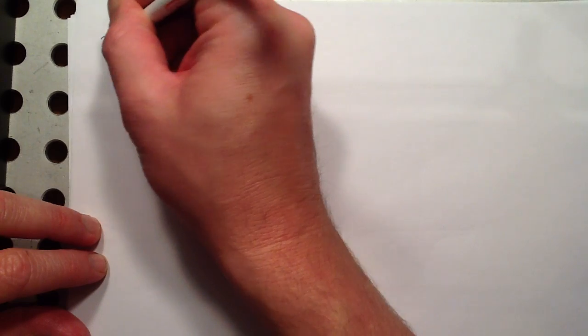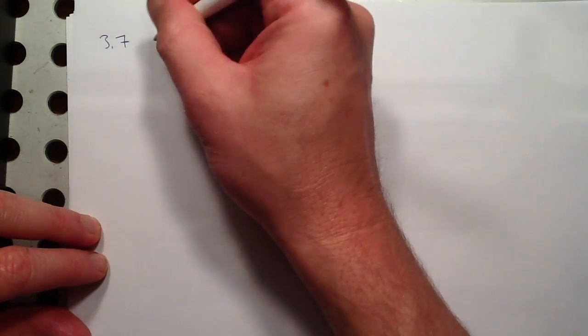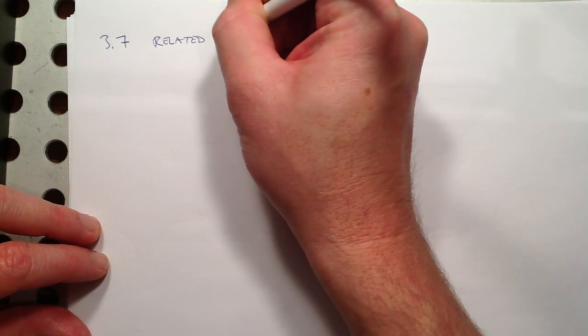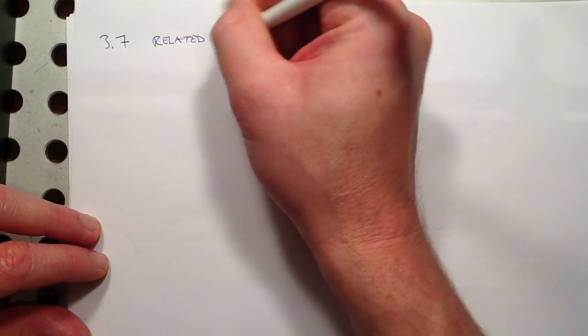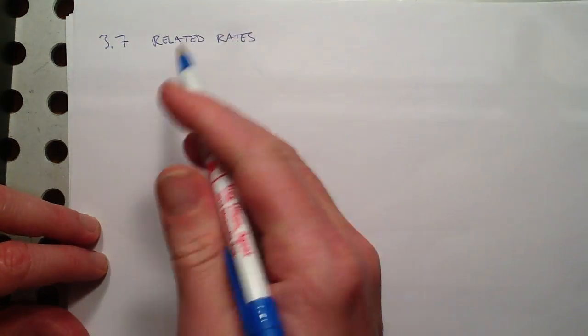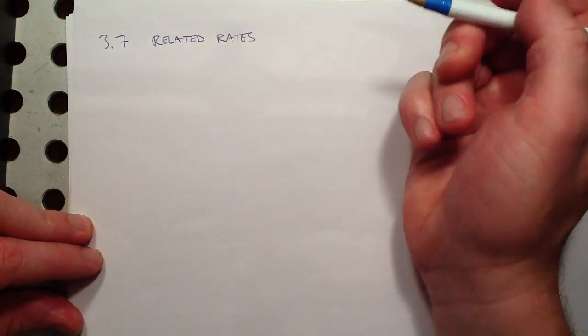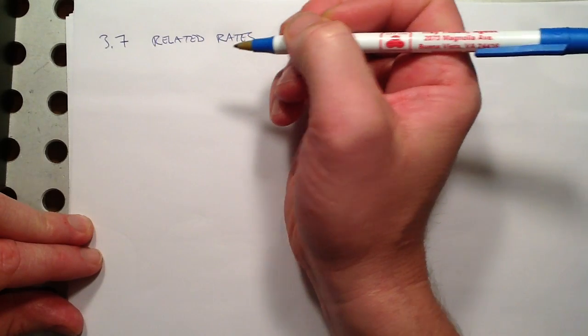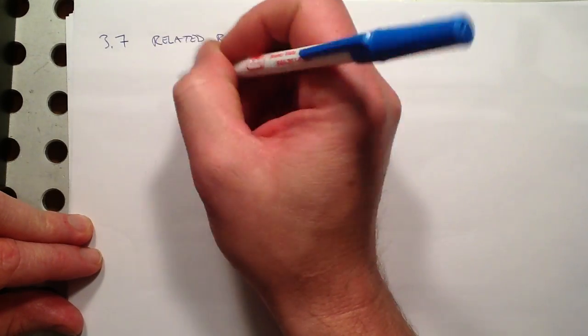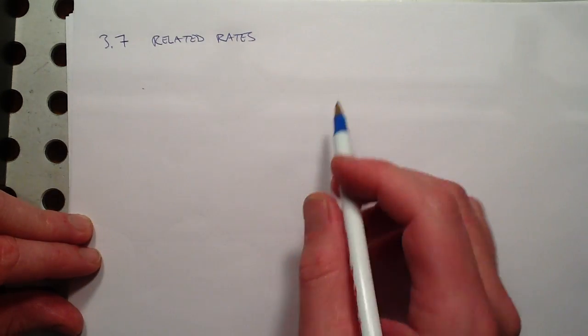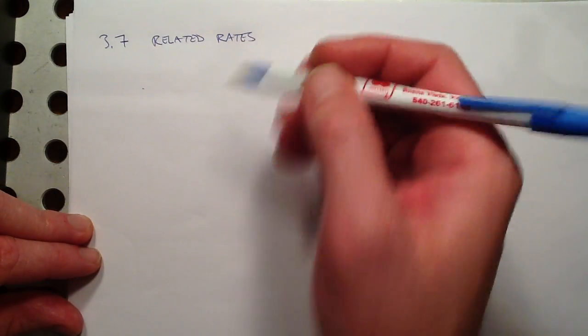This video contains the notes for section 3.7. Section 3.7 is about what we call related rates. Derivatives are rates of change, so this is well situated in our chapter about derivatives. I'm going to give you one of the classic examples to think about here, and we'll use that example to motivate our notes and how we approach problems like this.